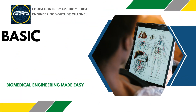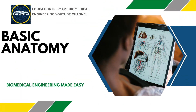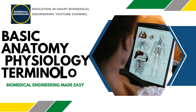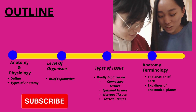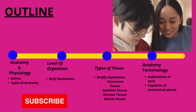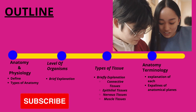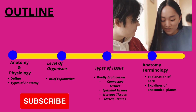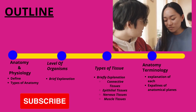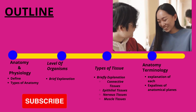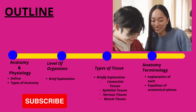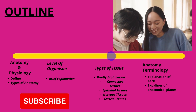Hello and welcome to Education in Smart Biomedical Engineering. In this video, we will be discussing basic anatomy and physiology terminology. Today's outline includes: Definition of Anatomy, Definition of Gross Anatomy, Definition of Microscopic Anatomy, Definition of Physiology, Explanation of Level of Organization of Human Body, Types of Tissues, Types of Muscle Tissue, Anatomy Terminology, and Anatomy Planes.